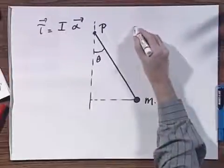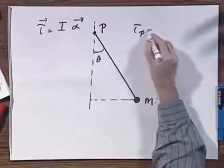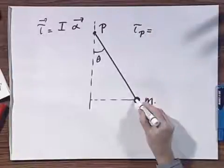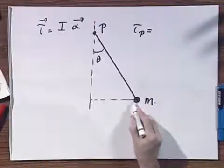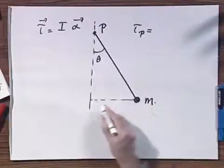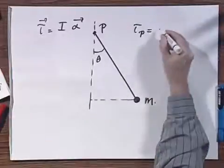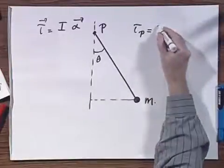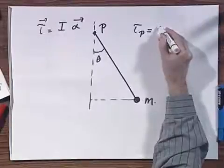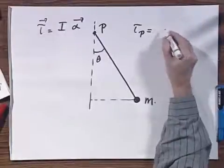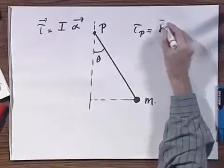There is a torque relative to point P. The torque equals r cross F.